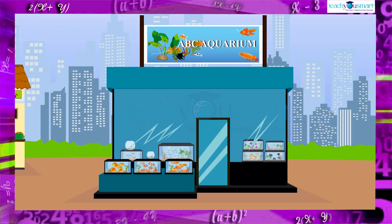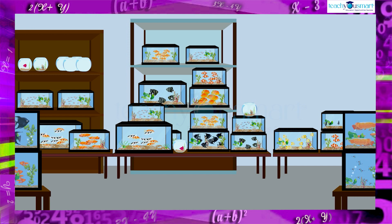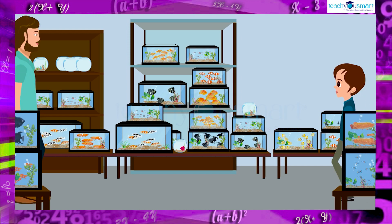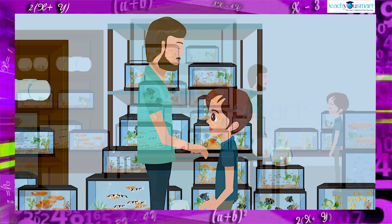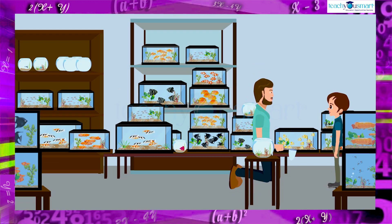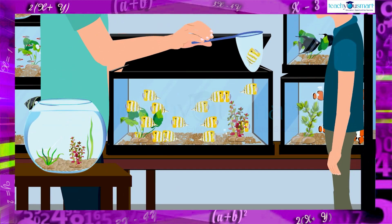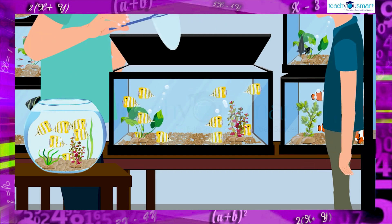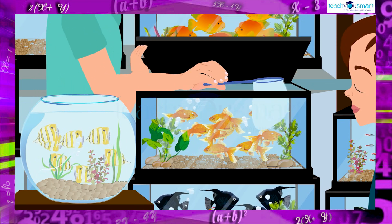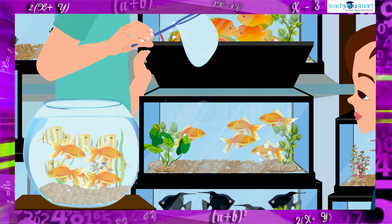In an aquarium park, we can see the fishes kept in different bowls or tanks. One day, Kevin goes to the aquarium park to buy some fishes. He likes goldfish and butterfly fish. He decided to buy them. The shopkeeper takes seven butterfly fishes and five goldfishes and transferred into a new bowl. Now, the total fishes in the bowl are twelve.